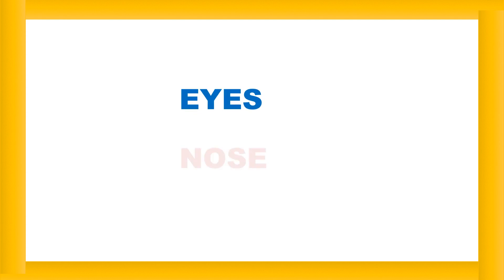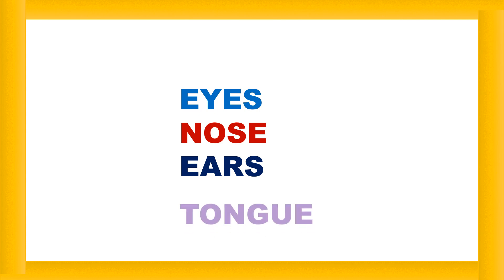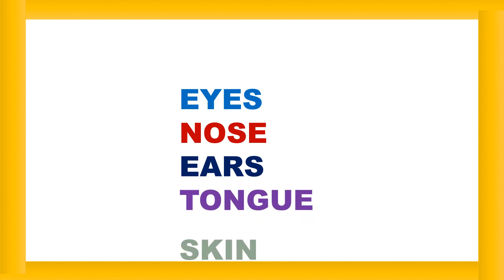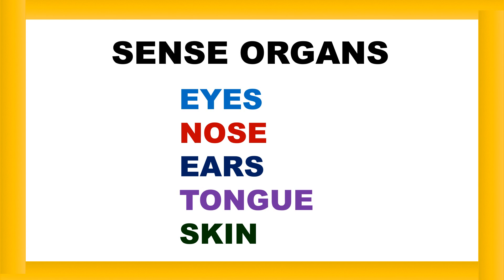We have seen 5 different organs which are very important for our life. They are eyes, nose, ears, tongue and skin. These 5 organs are called sense organs. That means we have 5 different sense organs in our body.